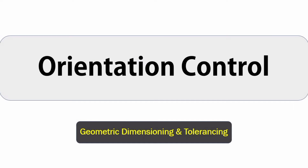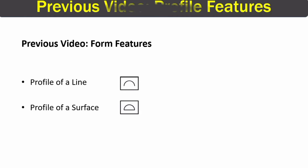Welcome to another video on geometric dimensioning and tolerances. In this video, we will learn about orientation controls. In our previous video, we learned about profile of a line and profile of a surface. In case you have missed that video, I will provide the link in the description. I have also uploaded a playlist on GD&T and will provide that link in the description as well.